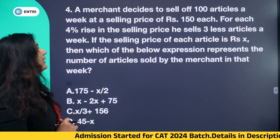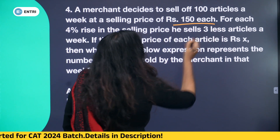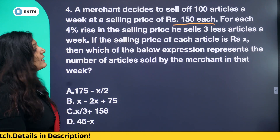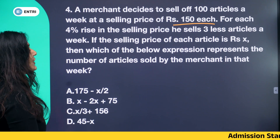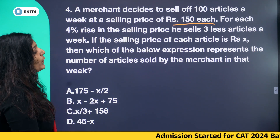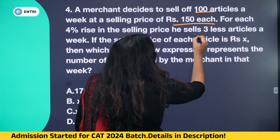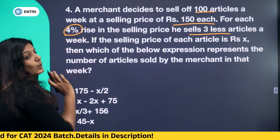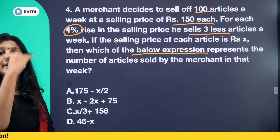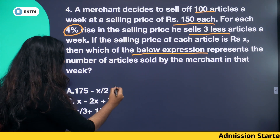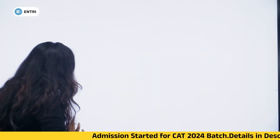Question number 4. A merchant decides to sell 100 articles a week at a selling price of Rs. 150 each. For each 4% increase in selling price, he sells 3 fewer articles a week. If the selling price of each article is h, which expression represents the number of articles sold by the merchant in that week? This is a slightly tricky question.